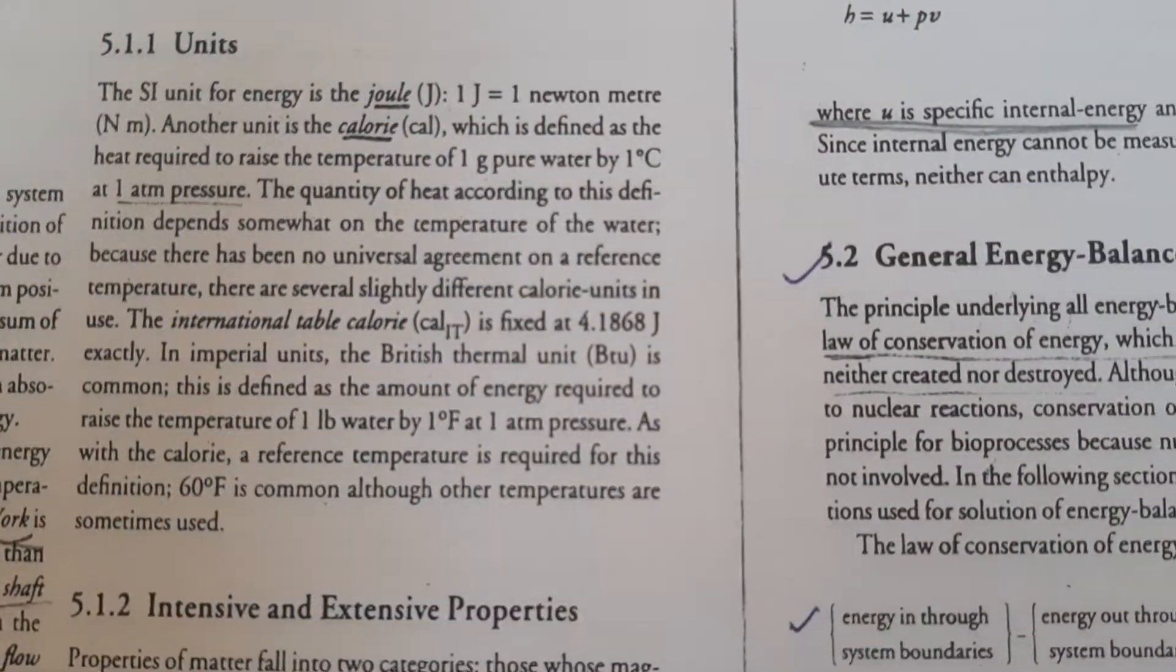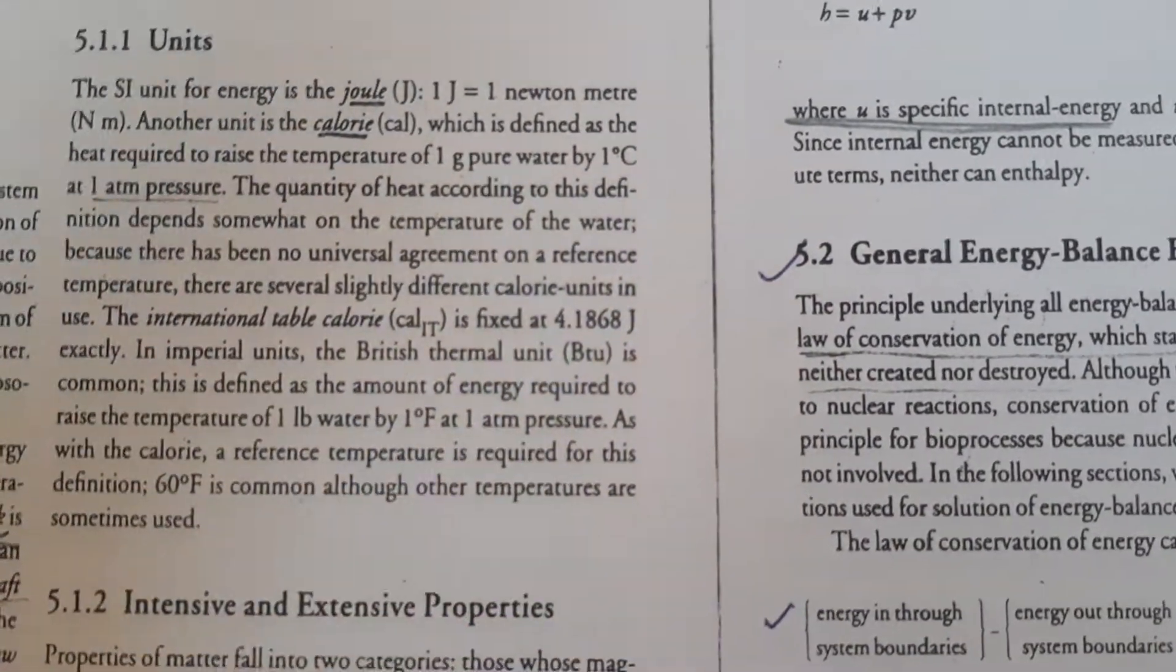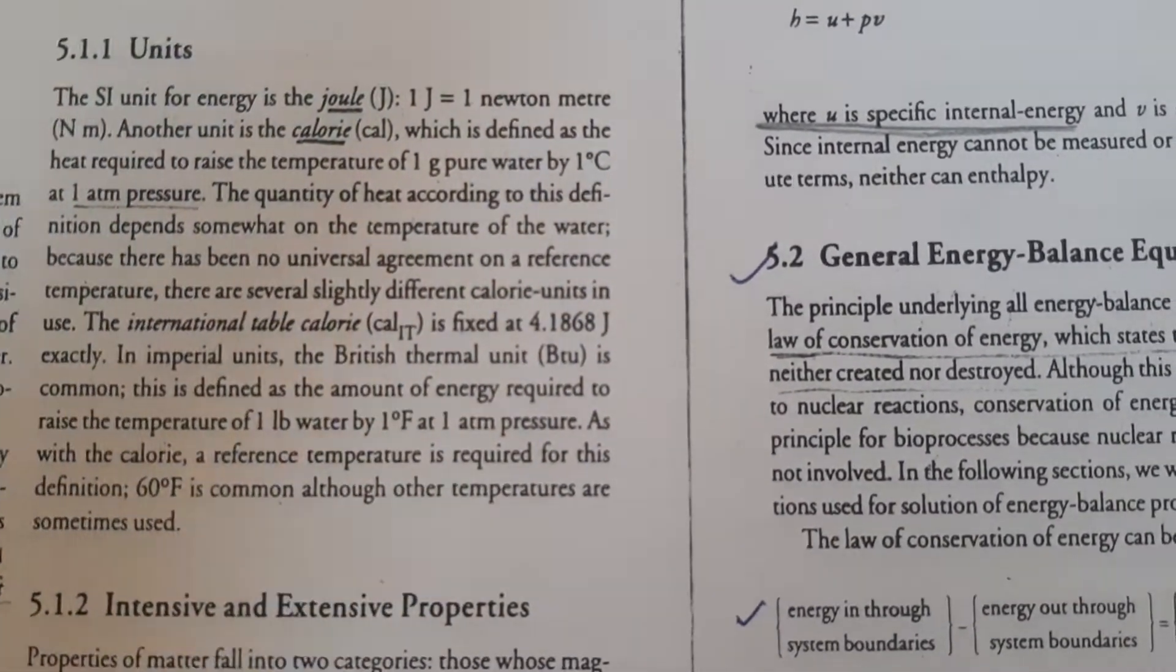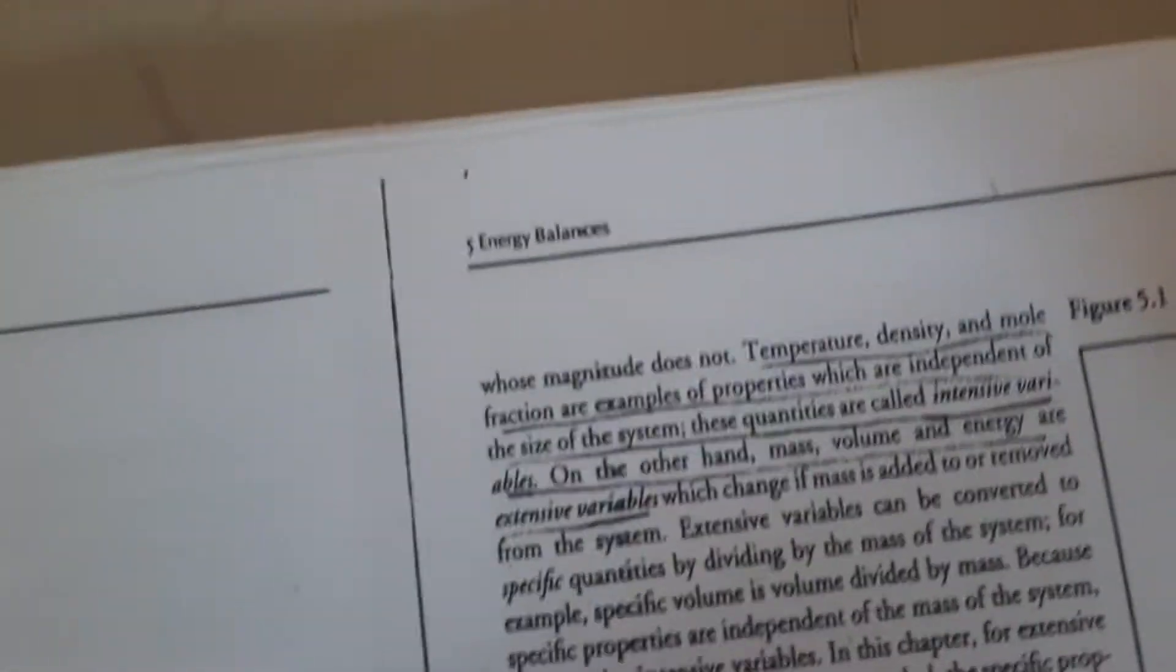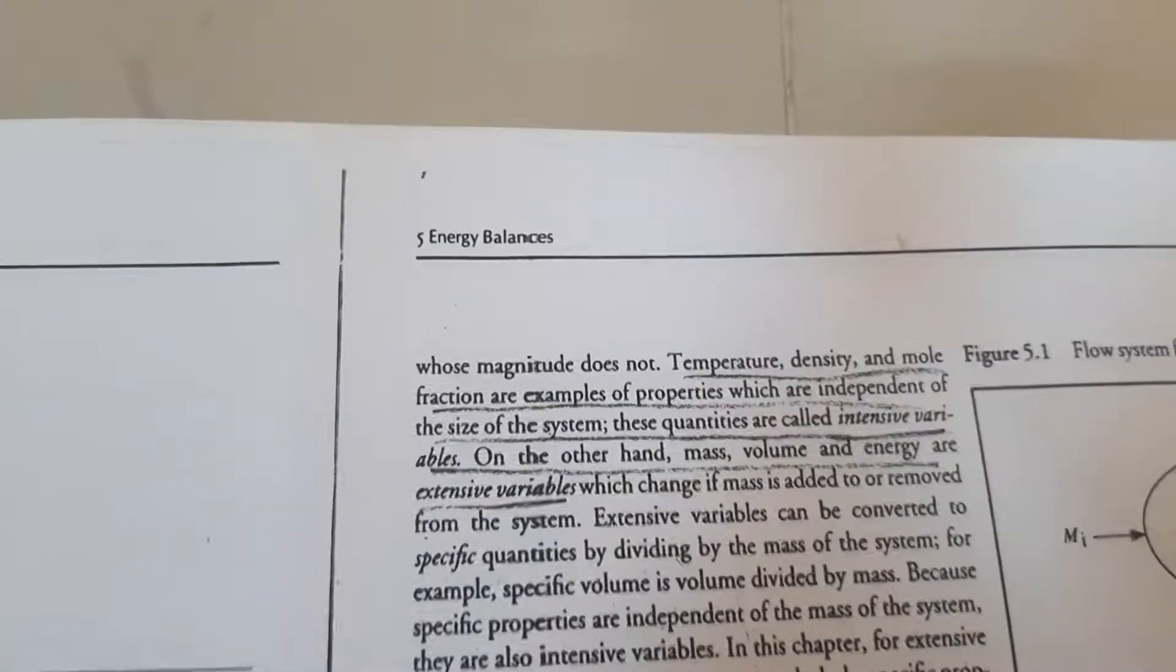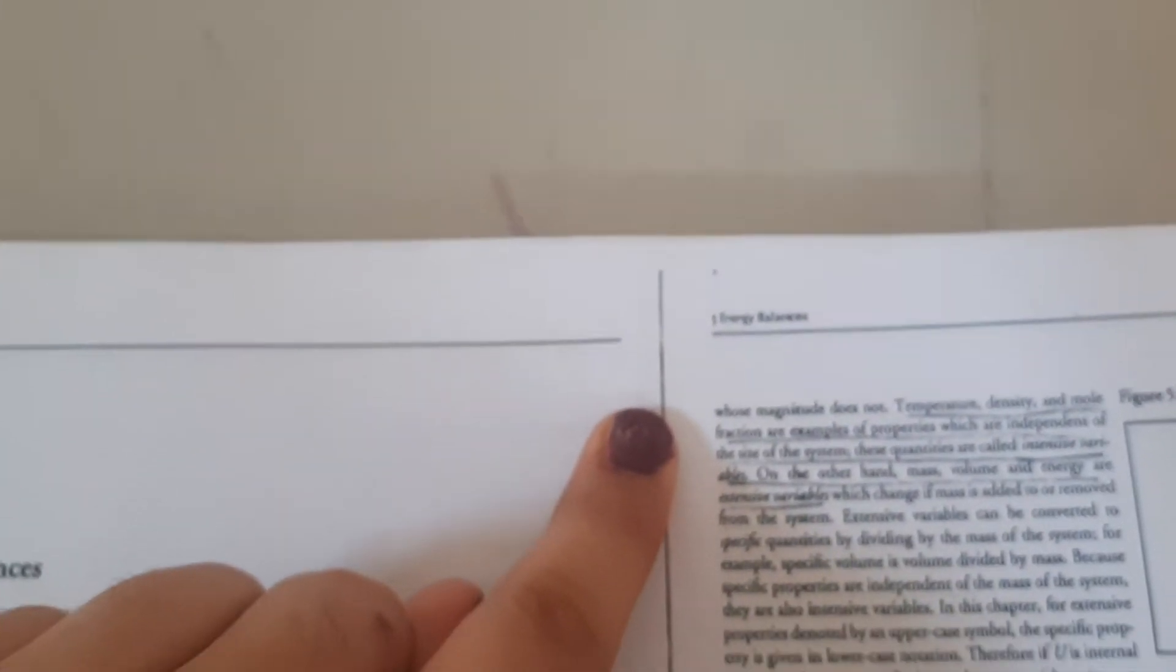There are some intensive and extensive properties. Properties of matter fall into two categories: intensive and extensive. Temperature, density, molecular fraction are examples of properties which are independent of size of the system. These properties are intensive. The other side is mass, volume, energy. We call these extensive properties or extensive variables.